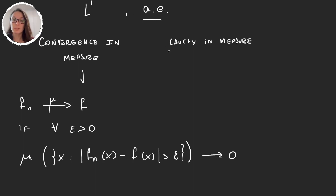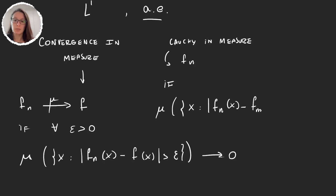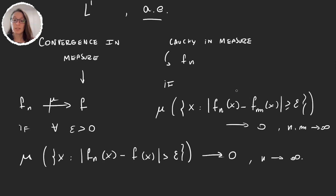We also say that a sequence of functions fn is Cauchy in measure if the measure of all the points for which fn(x) minus fm(x) is greater than epsilon goes to zero as both n and m go to infinity. This is similar to convergence in measure, but it's a characteristic a sequence can satisfy. It's called Cauchy in measure because, from the point of view of the measure, the sequence is Cauchy on the points that matter.